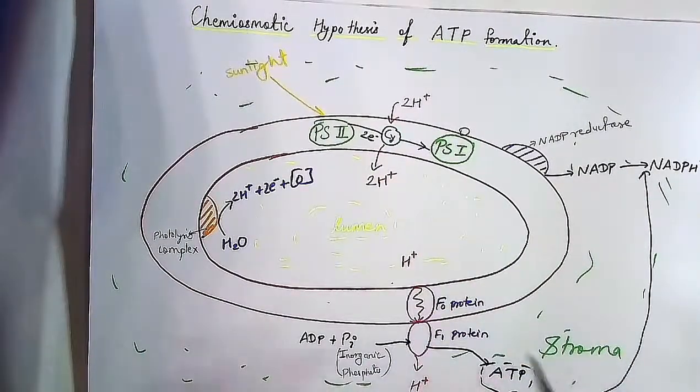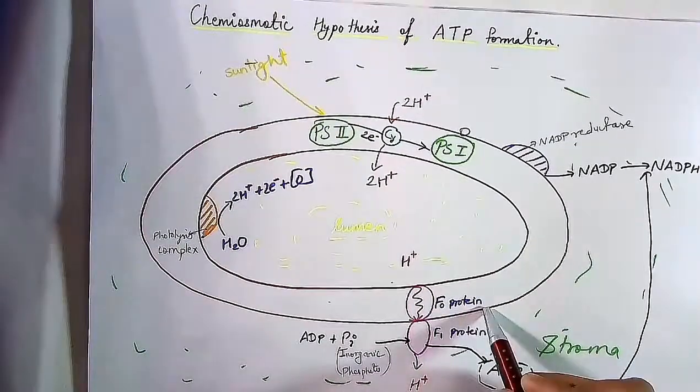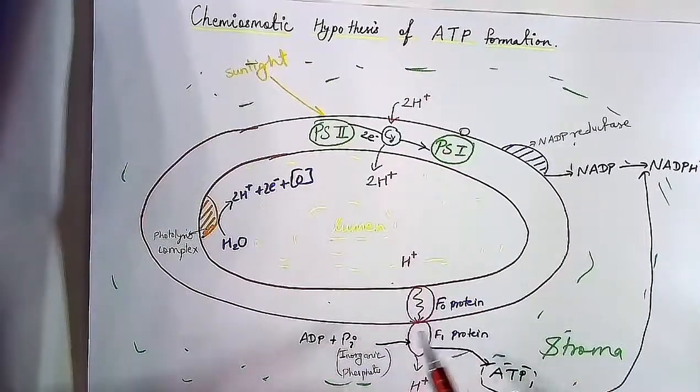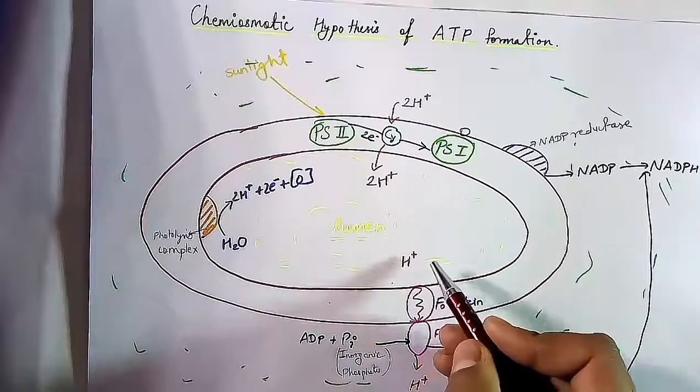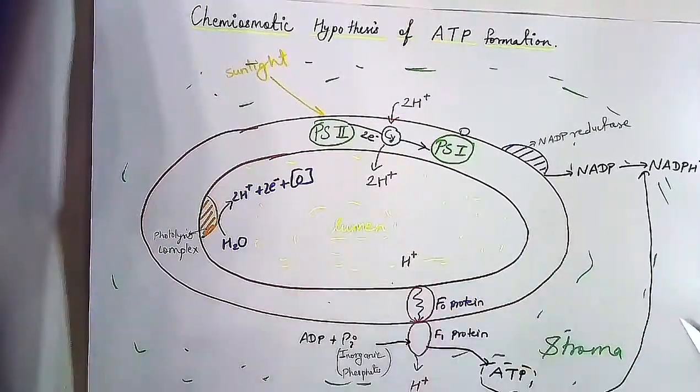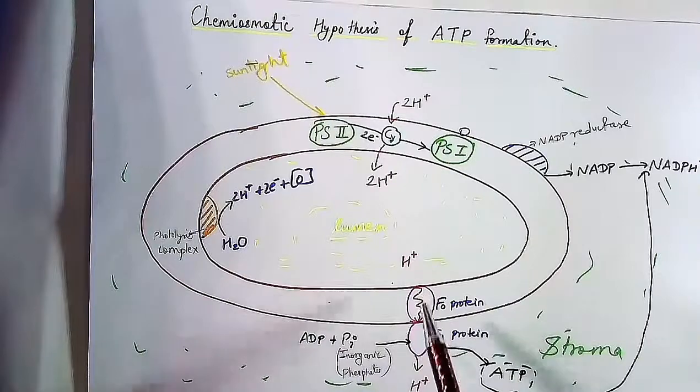And this is done with the help of F0 protein, also known as integral or intermediate protein. During the diffusion of proton from lumen to stroma, energy is released and that energy is utilized to form ATP.